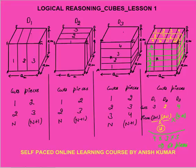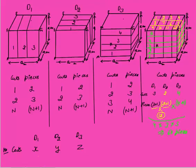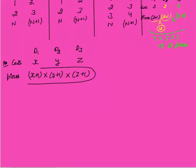Very important: once you apply the cuts simultaneously, the number of pieces gets multiplied. If the number of cuts are x, y, and z in D1, D2, and D3 directions, then pieces = (x+1) × (y+1) × (z+1). I have proved this. The number of pieces will be (x+1)(y+1)(z+1) if you make x, y, and z cuts.